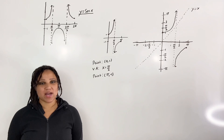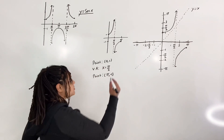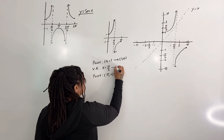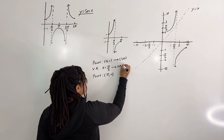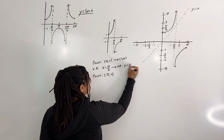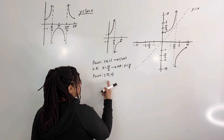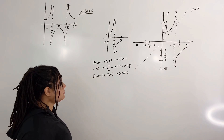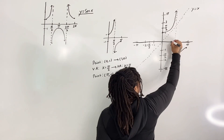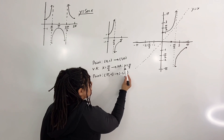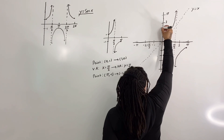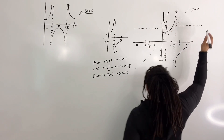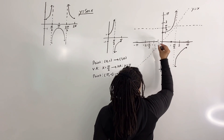Step four: swap the x and y values. The point (0, 1) becomes (1, 0). The vertical asymptote at x equals pi over two becomes a horizontal asymptote at y equals pi over two. So I'm going to put those on the graph: one zero here, the horizontal asymptote at y equals pi over two, and another point at (negative one, pi).